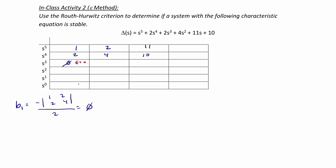Now we're going to keep going with our analysis. Next we're going to find b2. b2 is equal to negative 1 times 10 minus 2 times 11, divided by 2, and that's going to be 6.